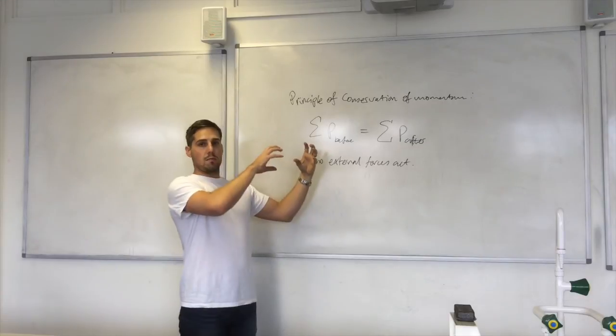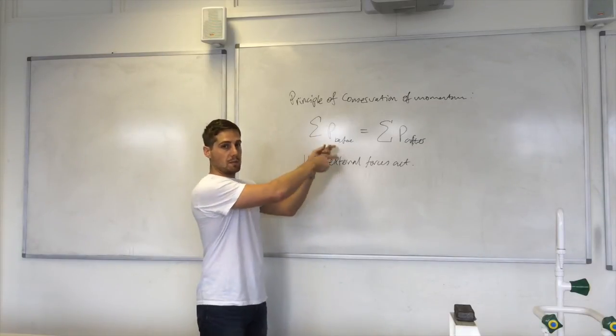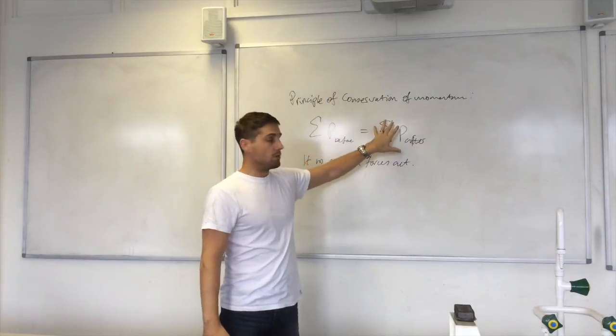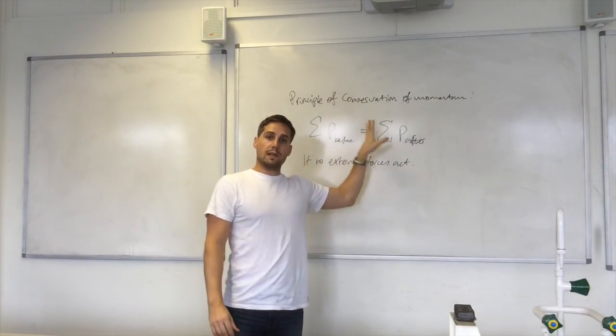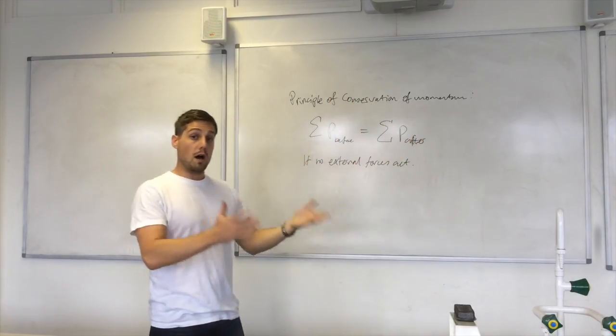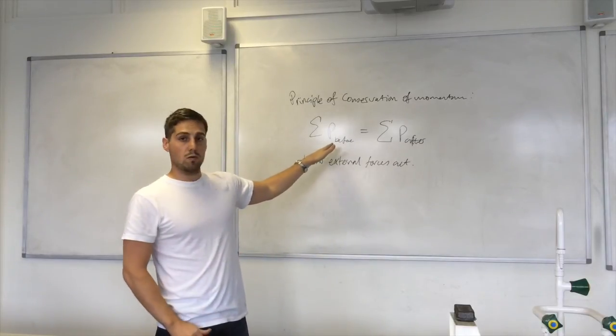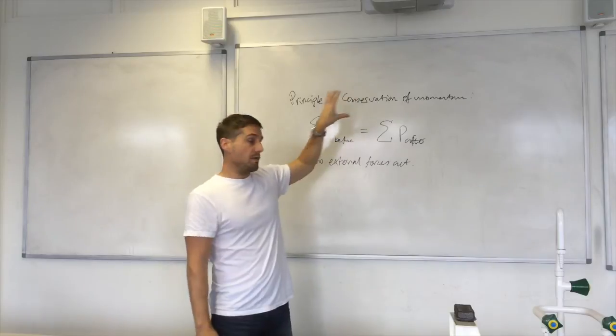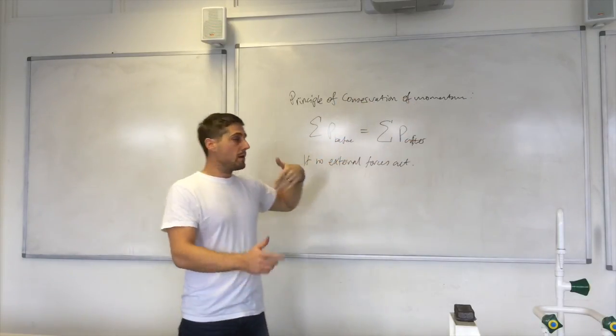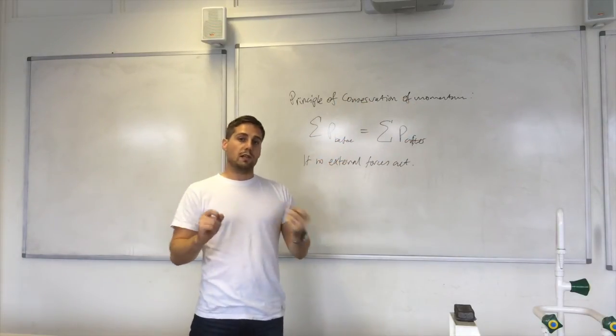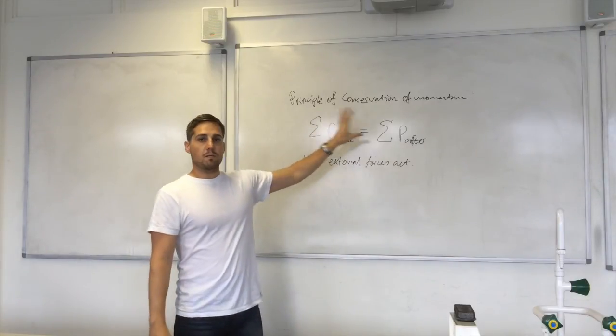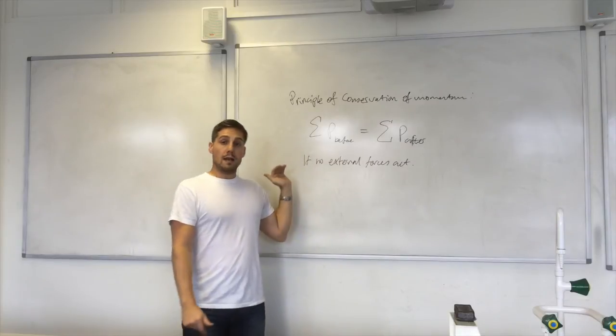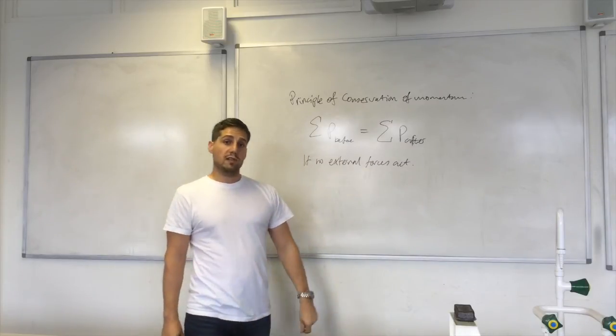They collide or there's an explosion that forces them apart, and it's the momentum of object A plus the momentum of object B before, which is equal to the momentum of object A plus that of B after. That's what's equal. So it's not saying the momentum of object A is equal to the momentum of object A after. The momentum of the individual objects will change, but the sum of the momentum is equal before and after.